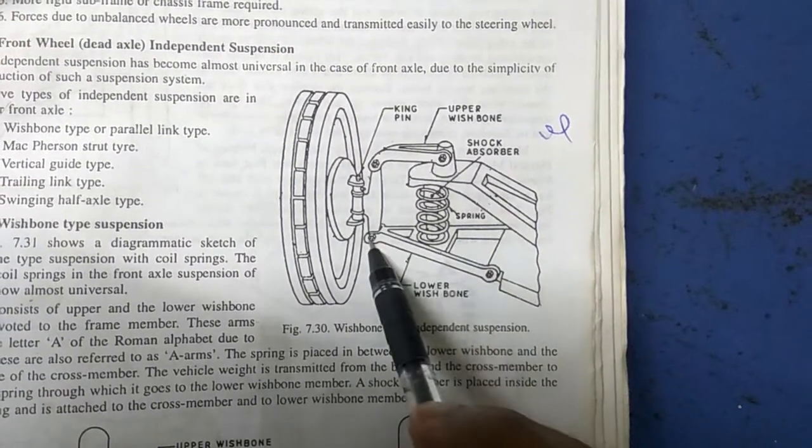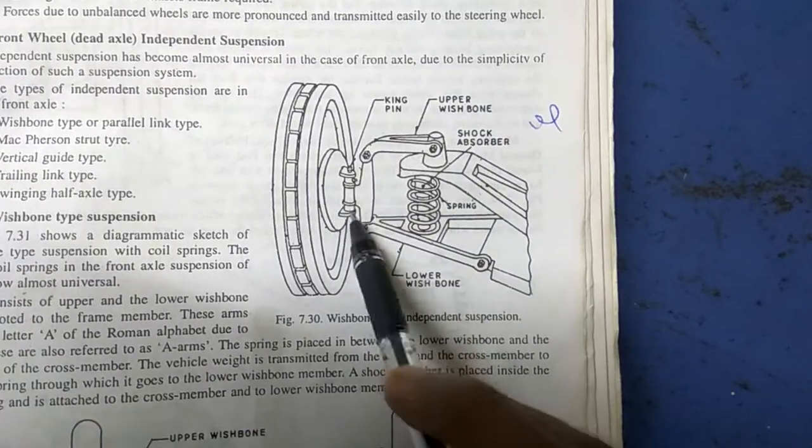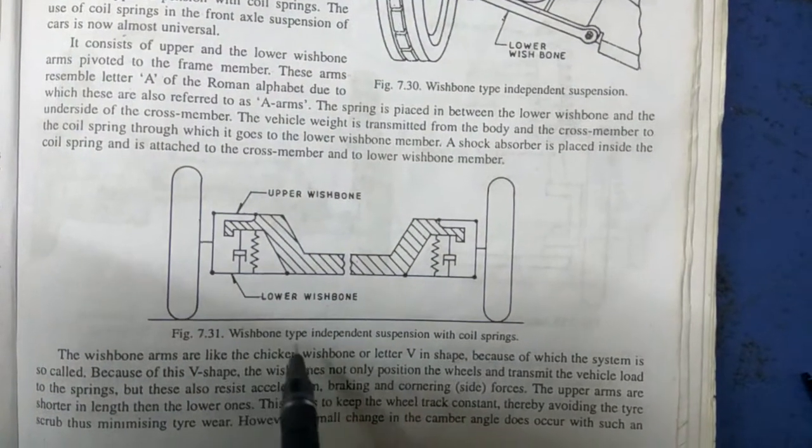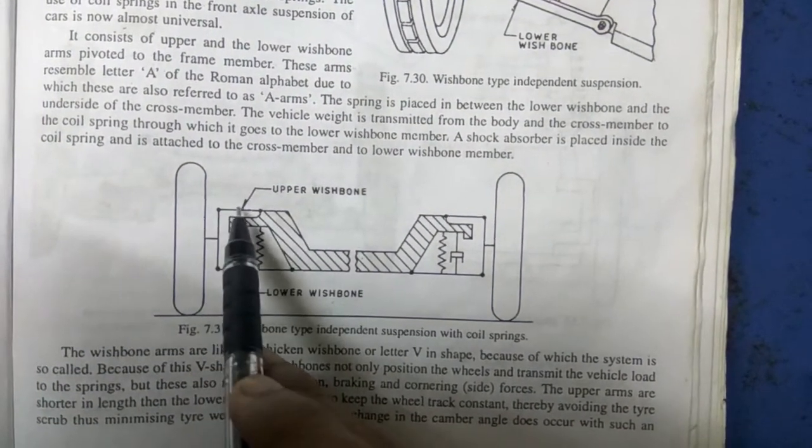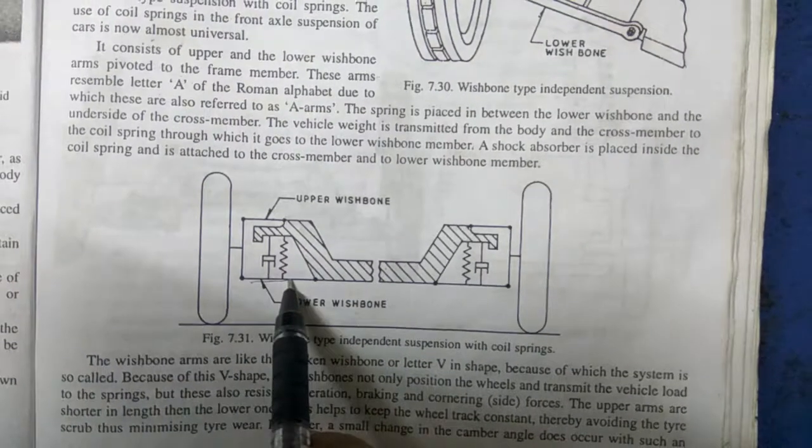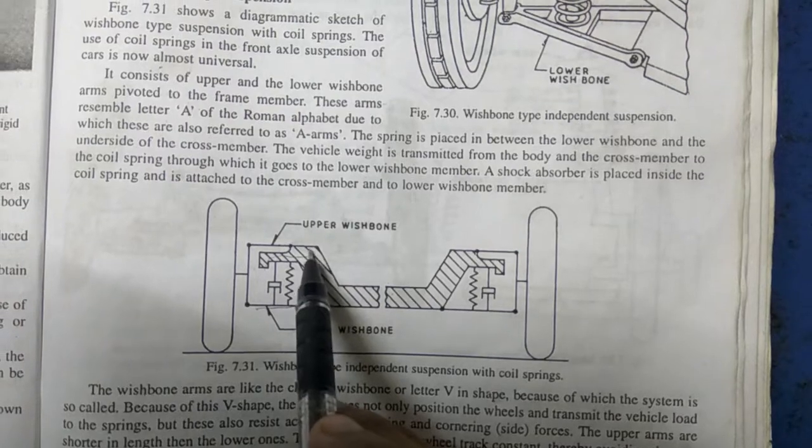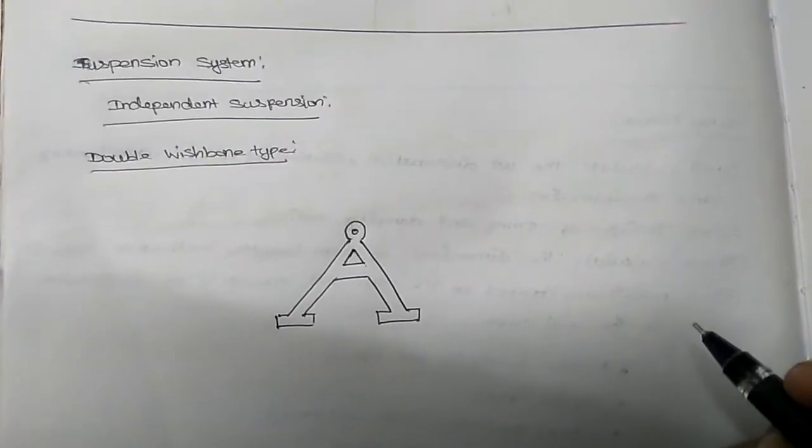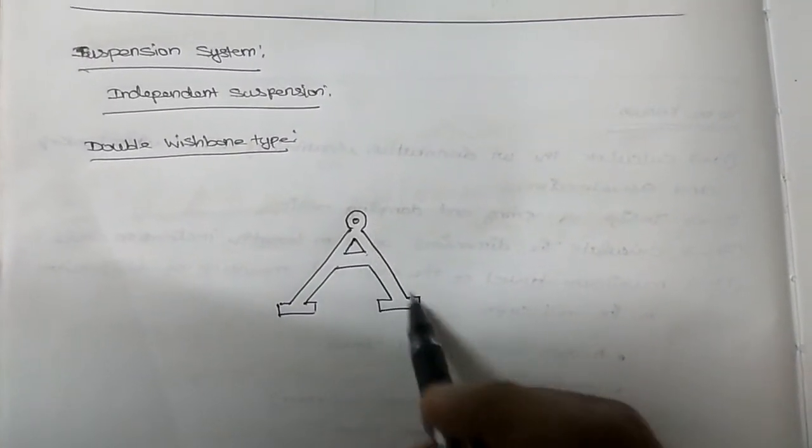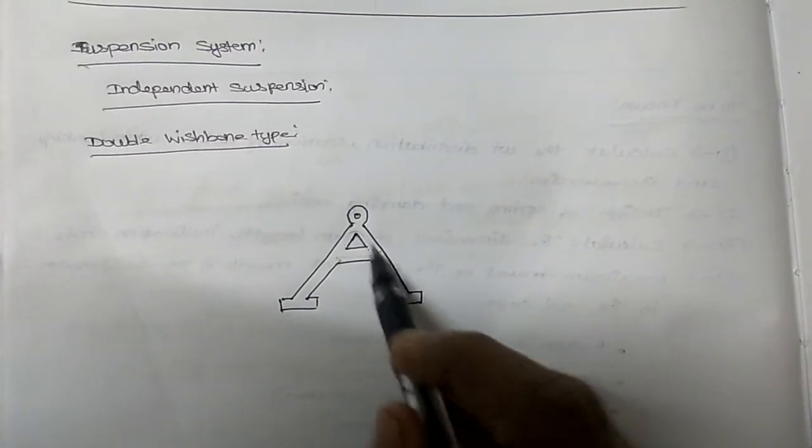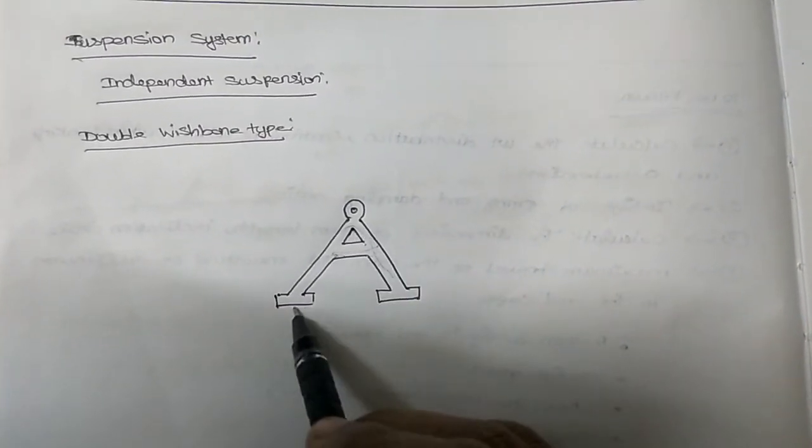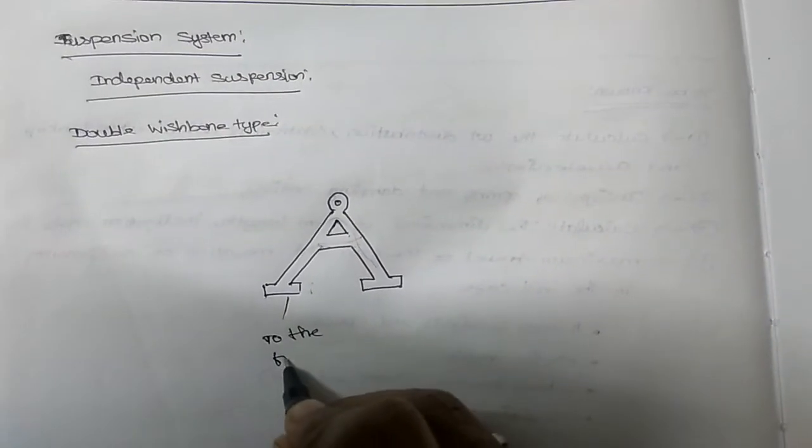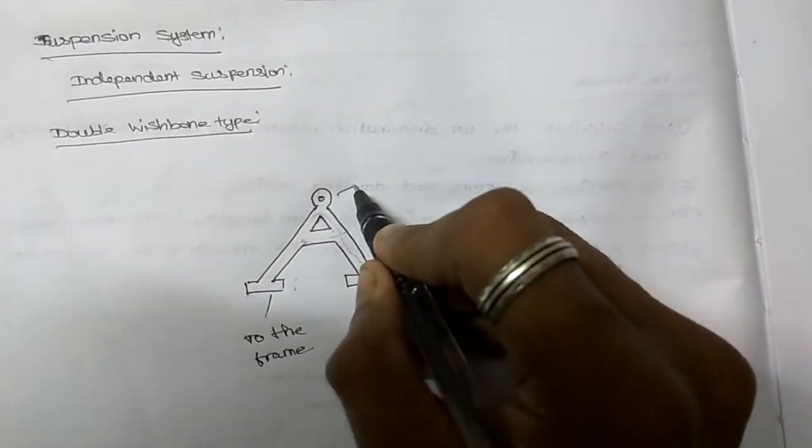These upper and lower wishbones are connected to the kingpin. Let us see the schematic diagram of the wishbone system. This is the upper wishbone, this is the lower wishbone, and this is the body frame. It consists of two A-arms—the wishbones are in the shape of A-arms. This is connected to the frame and will be connected to the wheel.